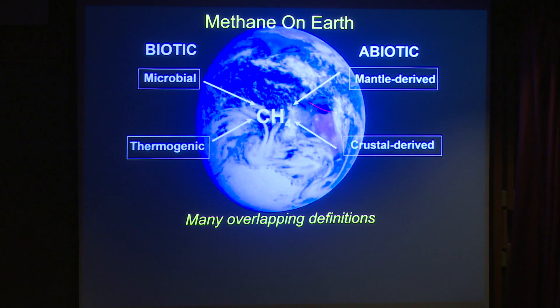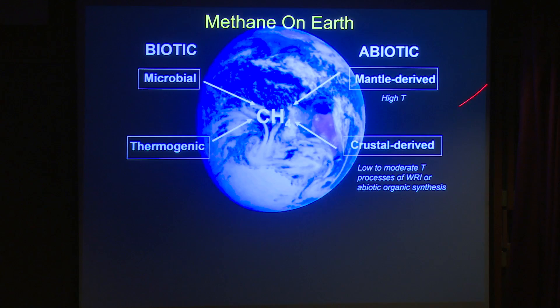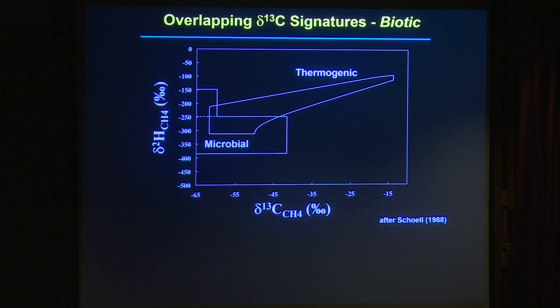On the other side we have abiotic processes, including mantle-derived or magmatic and volcanic processes, but also a category that has developed with a lot of interest over the last 10 to 15 years: low to moderate temperature processes of water-rock reaction. Both marine hydrothermal vents and continental systems show us that these water-rock reactions can undergo abiotic organic synthesis and produce methane. That's been an evolution in our understanding over time.